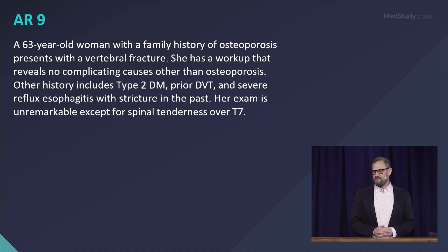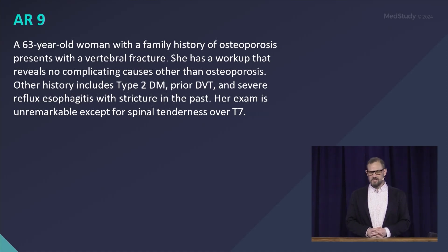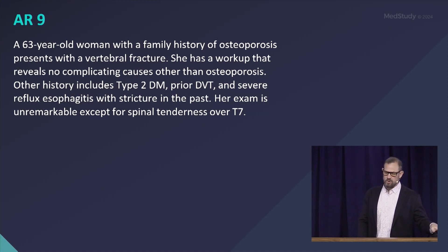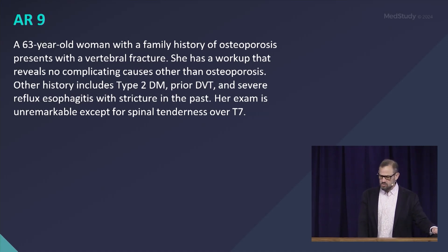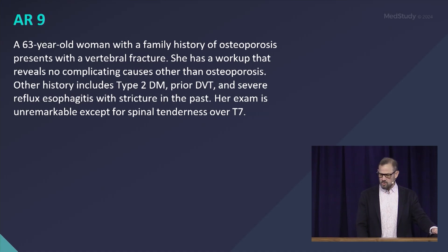A 63-year-old woman with a family history of osteoporosis presents with a vertebral fracture. Her workup reveals no complicating causes other than the osteoporosis. She has a history of type 2 diabetes, a prior DVT, and severe reflux esophagitis with stricture. Her exam is unremarkable except for spinal tenderness over T7.